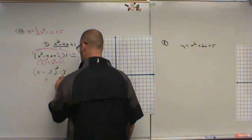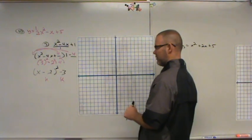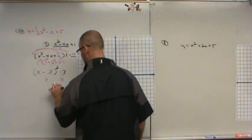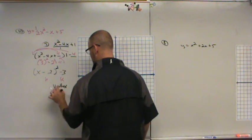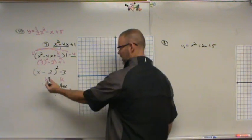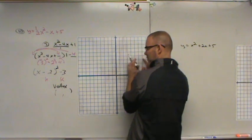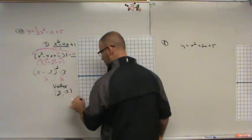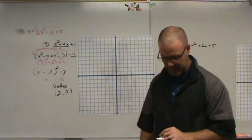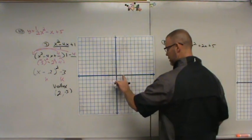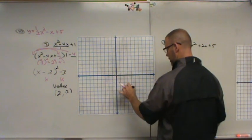So this tells me my H and K. So I can find my vertex, which, if you remember, my vertex, if it's X minus, it shifts to the right. So two and negative three becomes my vertex. So I'm going to plot that. One, two. One, two, three. Two and negative three.